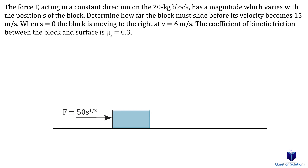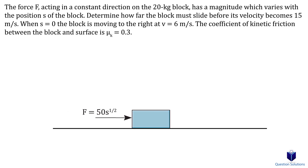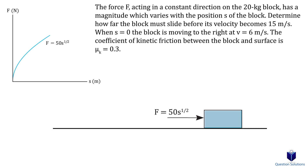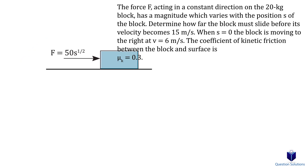Let's take a look at the next example. We need to find how far the block must slide before reaching a velocity of 15 meters per second. Unlike the previous question, we have a variable force — force F is dependent on the distance traveled by the block. We also have friction, so first we will calculate the frictional force.